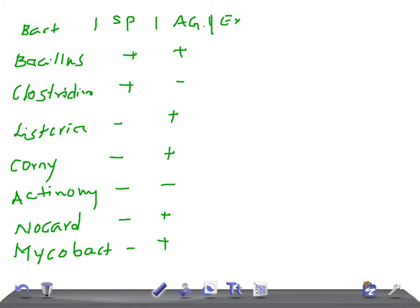Now let's talk about exotoxin production. Bacillus — yes, they produce exotoxins. Clostridium — yes. Listeria — no. Corynebacterium — yes. Actinomyces — no. Nocardia — no. Mycobacterium — no exotoxins.